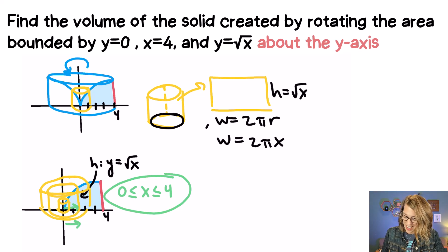So my area, the area for this rectangle, is 2πx times my height which is the square root of x.